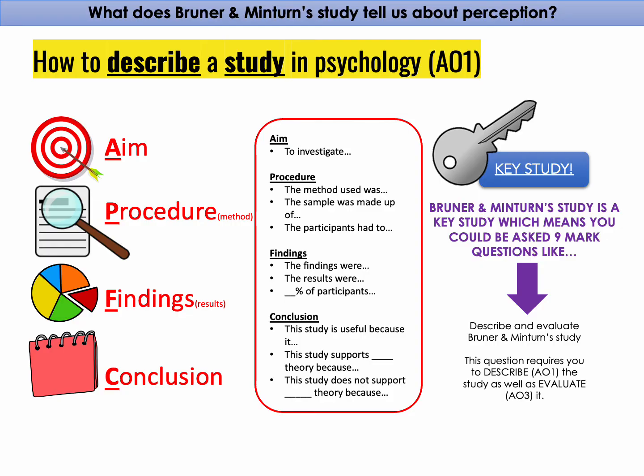The key study you have to know for expectation and perception is Bruner and Minturn's study. This is a key study, which means you could be given a nine-mark question like 'describe and evaluate Bruner and Minturn's study.' You would need up to four marks of description — covering the aim, procedure, findings, and conclusion — and then two strong evaluation paragraphs to earn five marks of AO3.